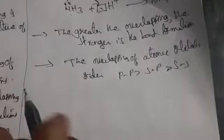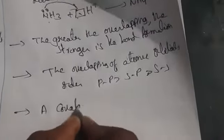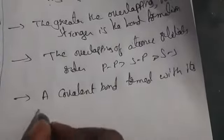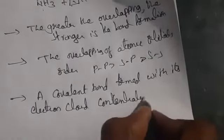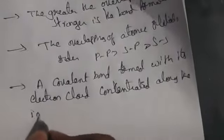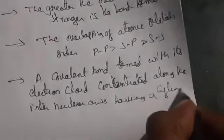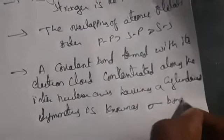A covalent bond formed with its electron cloud concentrated along the internuclear axis, having cylindrical symmetry, is known as a sigma bond. Linear overlapping of atomic orbitals gives the formation of a sigma bond.